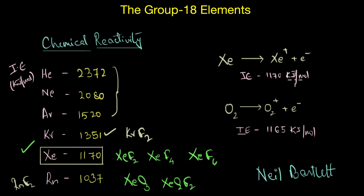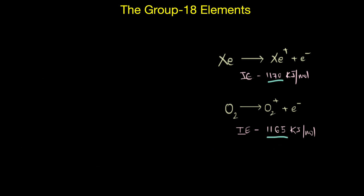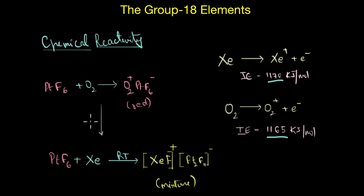He observed that the first ionization enthalpy of xenon was almost similar to that of the first ionization enthalpy of oxygen. So what he did was that he replaced oxygen in this particular reaction with xenon. And on doing so, he observed that the gases xenon and PtF6 almost immediately combined at room temperature to form a yellow colored solid.